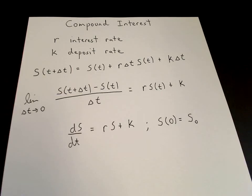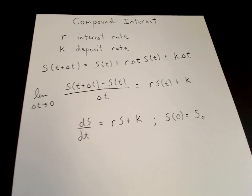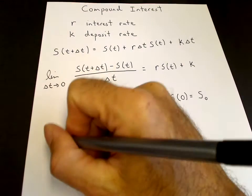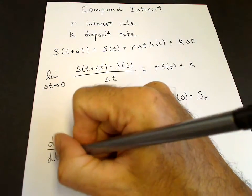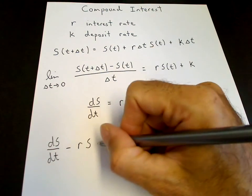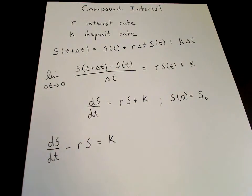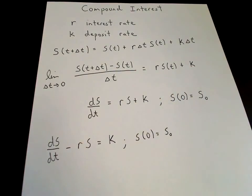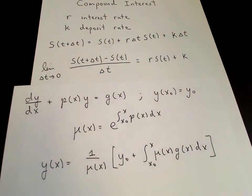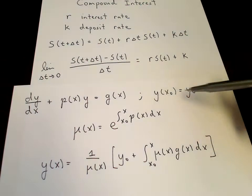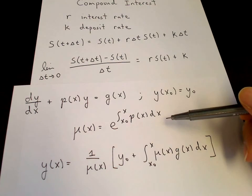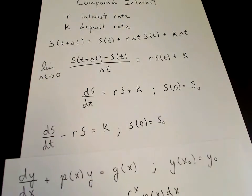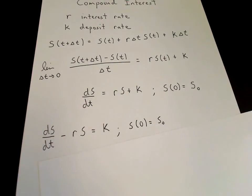We have a first-order differential equation with an initial condition, which gives us a unique solution. The equation is separable and also linear. We choose to solve it as a linear differential equation, putting it in standard form: dS/dt minus rS equals k, with initial condition S(0) = S-naught.